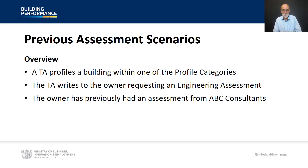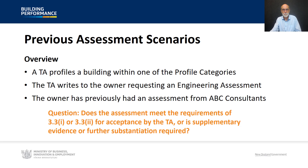To illustrate the process of recognising previous assessments: in a common scenario, a TA profiles a building within one of the profile categories covered in Module 2, then writes to the owner requesting an engineering assessment. The owner, knowing they already have an assessment, retrieves it from their files and looks to submit it as a previous assessment rather than commissioning a new one. The specific question from the methodology is: does the assessment meet the requirements of 3.3.1 or 3.3.2 for acceptance by the TA, or is supplementary evidence or further substantiation required?